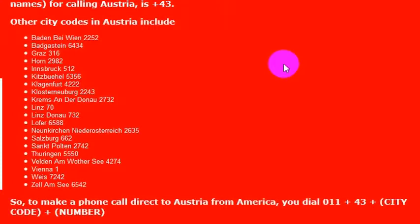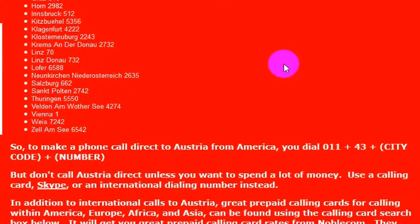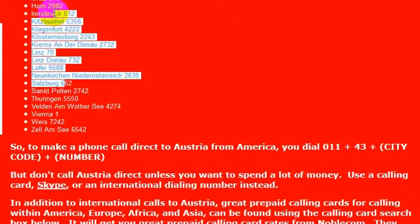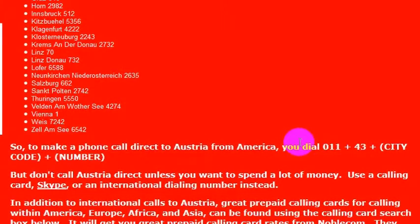It's very simple to make a phone call to an Austrian phone number if you know the phone number, of course. You simply pick up the phone from any internationally enabled phone and dial 011 plus 43, and then whatever the city code is of the city that you're looking to call, and then the number.